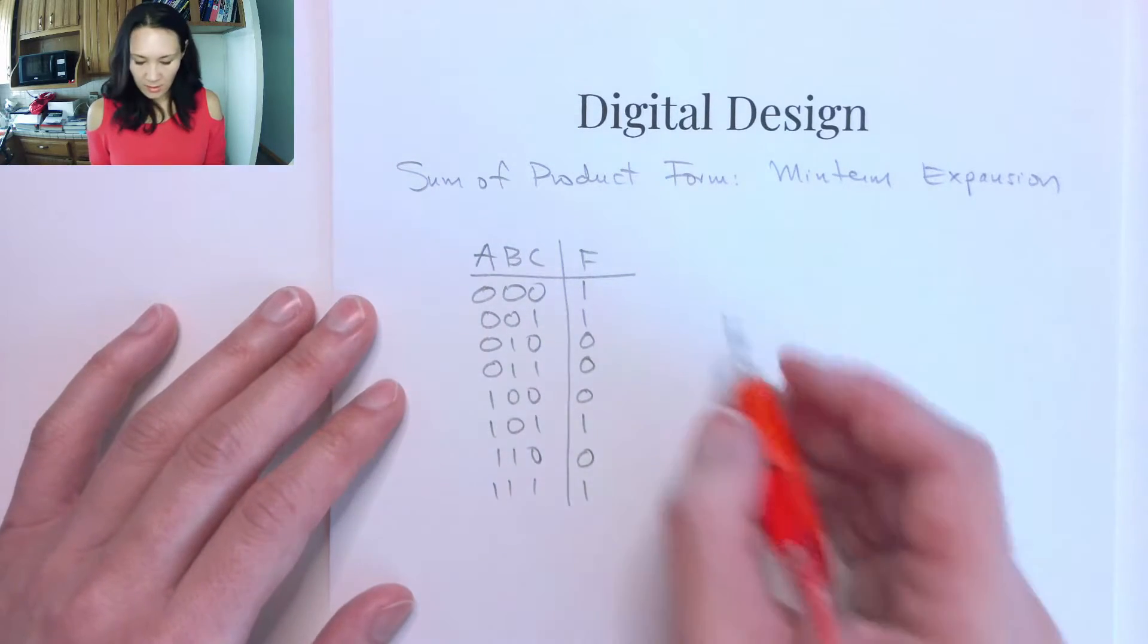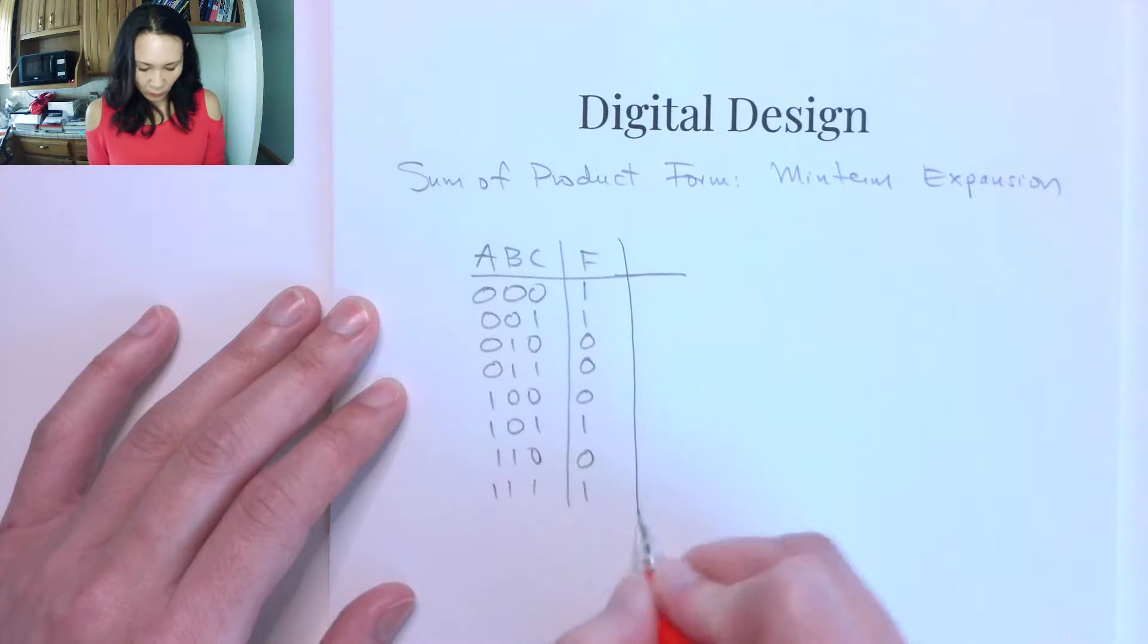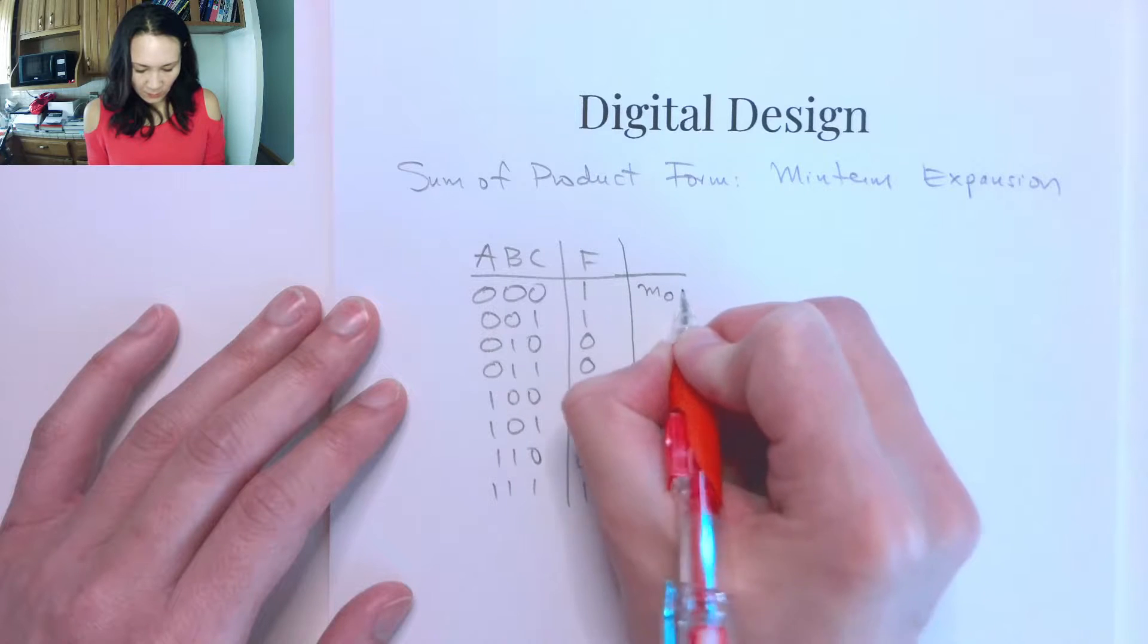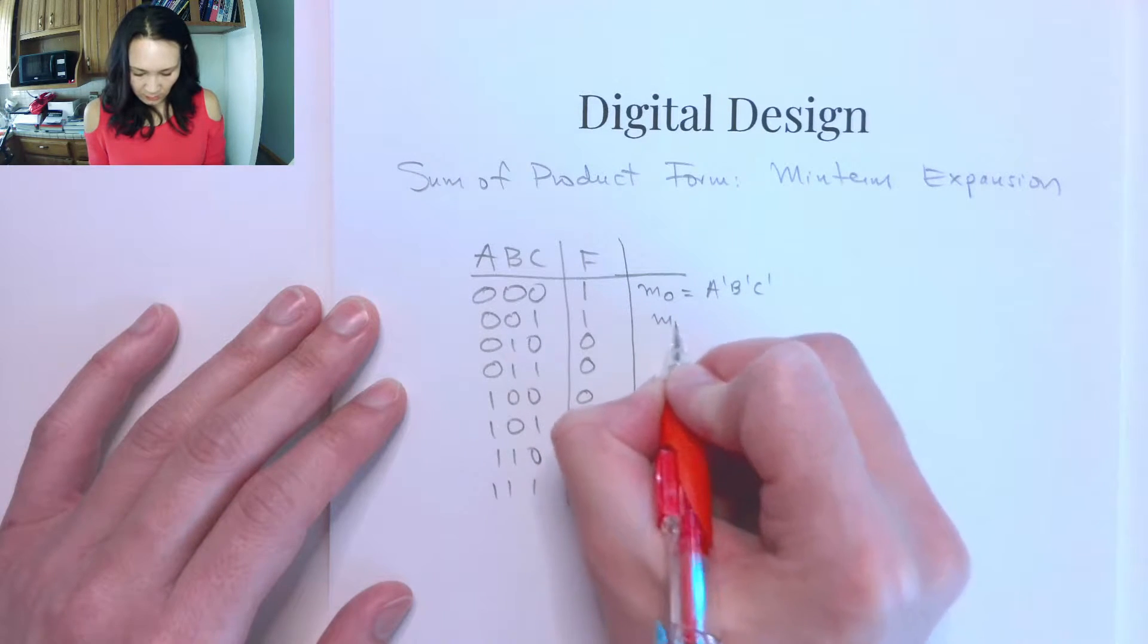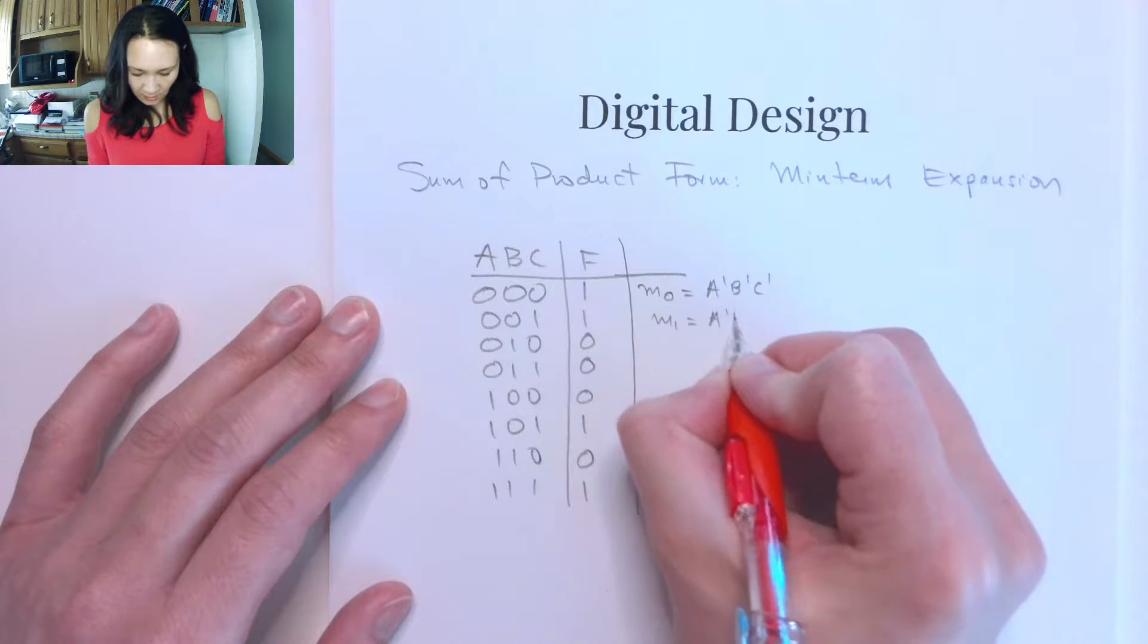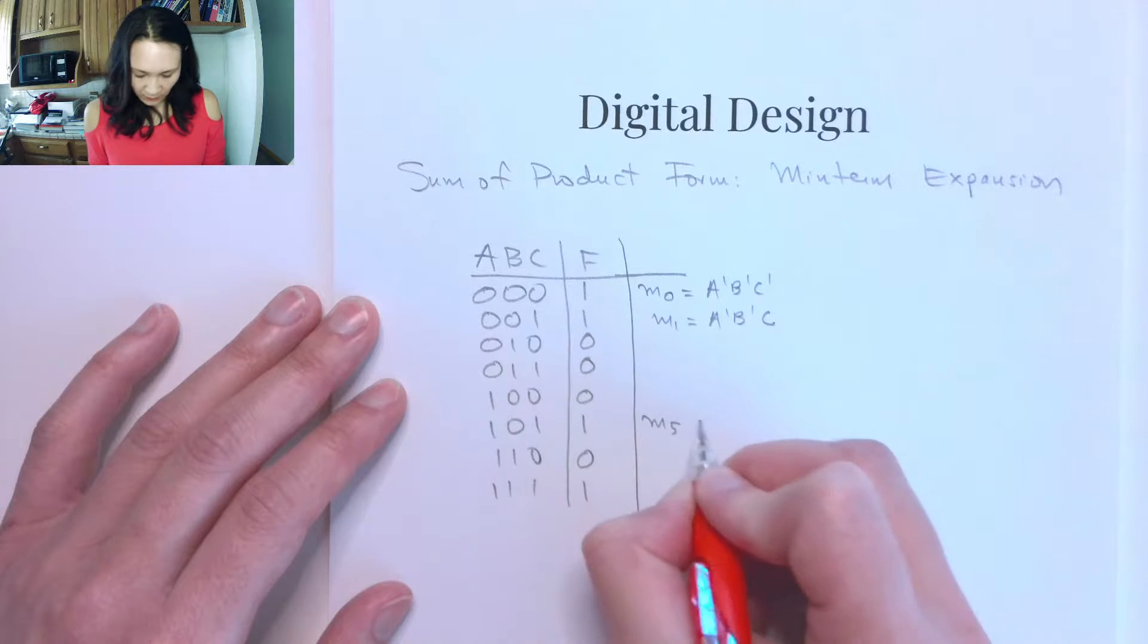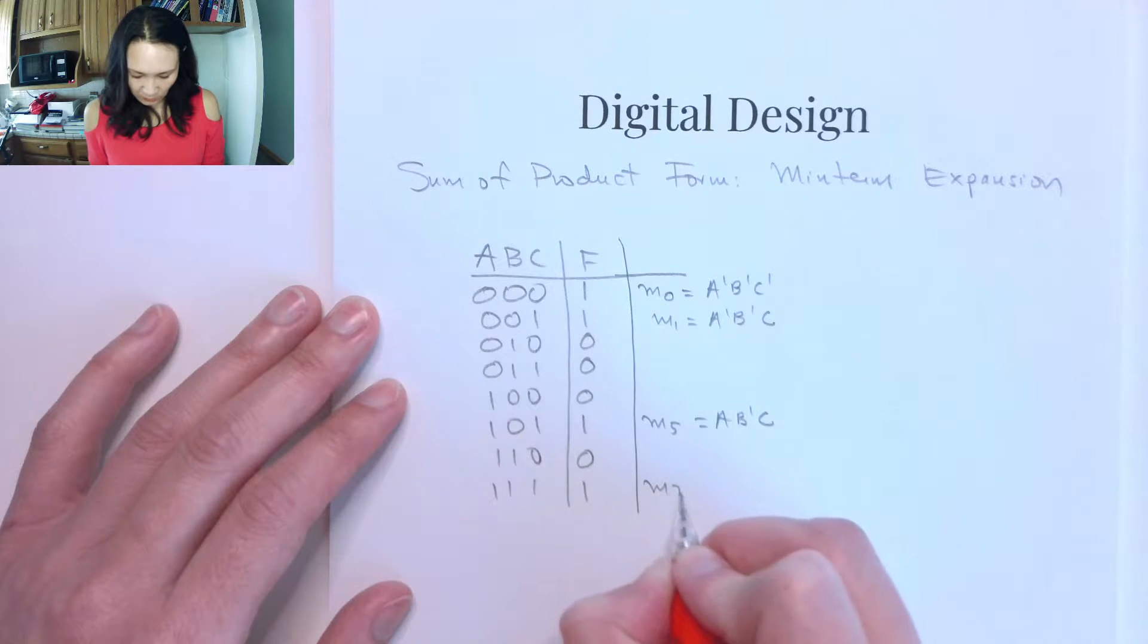The way we would write this function, just like we did in the last video, is we figure out which min-terms these are. This is min-term 0, which is A'B'C'. This is min-term 1, which is A'B'C. This one is min-term 5, which is AB'C. And this one is min-term 7, which is ABC.